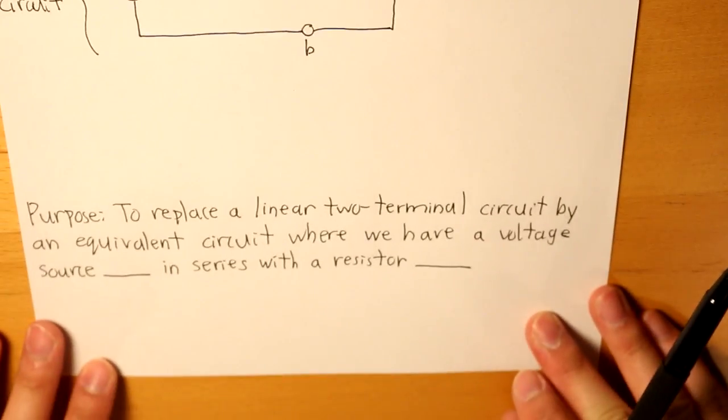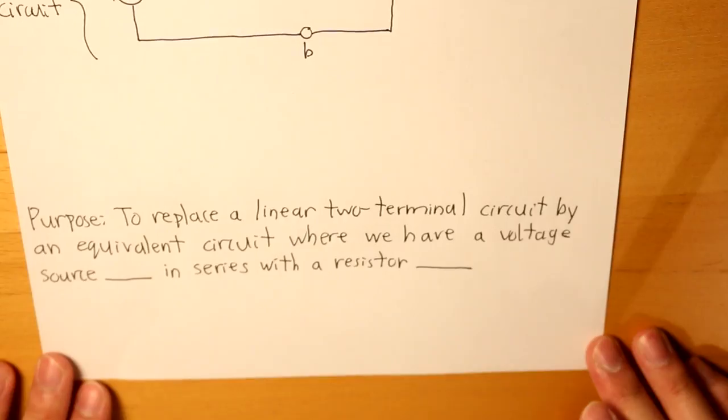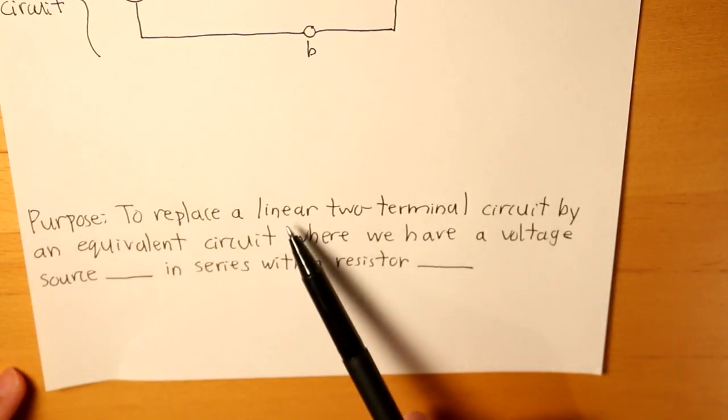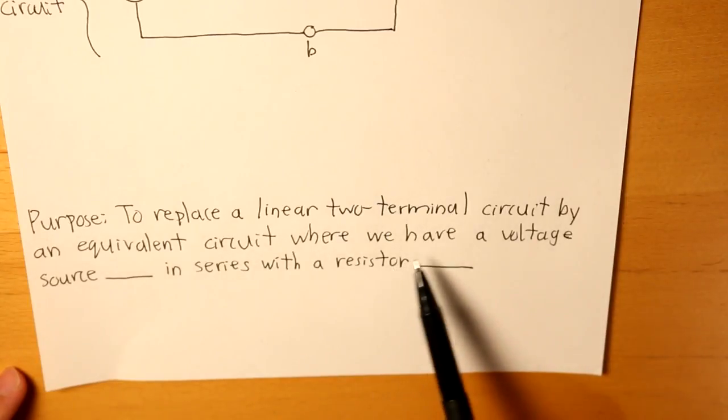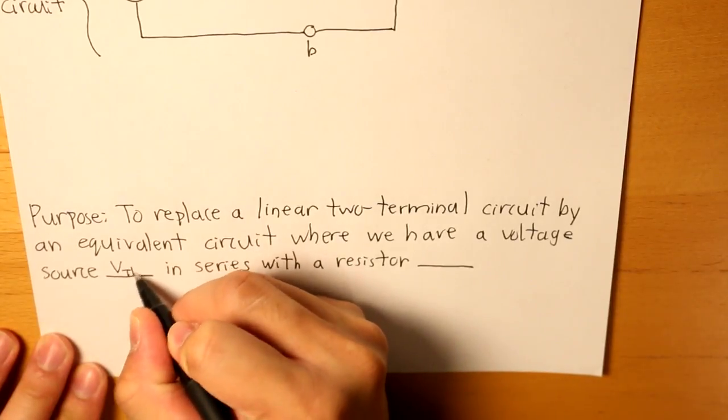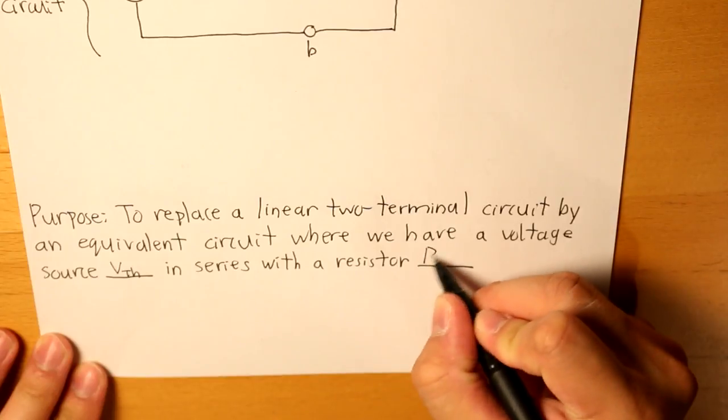And now I'm going to highlight what the purpose of Thevenin's Theorem is. The purpose is to replace a linear two terminal circuit by an equivalent circuit where we have a voltage source VTH in series with a resistor RTH.